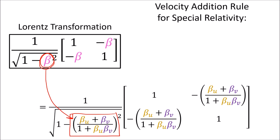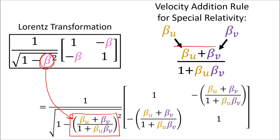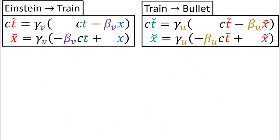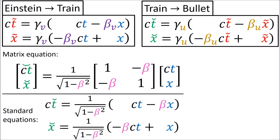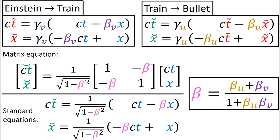This means we now know how to combine beta velocities in special relativity. When we do two Lorentz transformations in a row, they combine to give us a new Lorentz transformation with the beta coefficient being (beta-u plus beta-v) all over (1 plus beta-u beta-v). So the combined Lorentz transformation changes Einstein's coordinates ct and x to the bullet's coordinates ct-smile and x-smile, with this new beta coefficient.